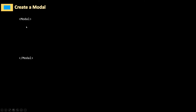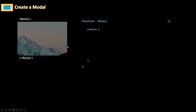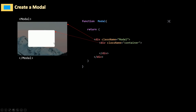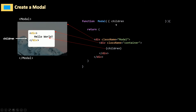To create our modal, it's a functional component, so I'm just going to create a function called modal. Inside I'm going to return some JSX. A modal is just a div — a box — that has a background color set to black with some opacity of 0.8. We have a div with the class name called modal, and then inside we have a container div. Inside the container we'll show whatever we want — in general, this will be children, received as props using destructuring.